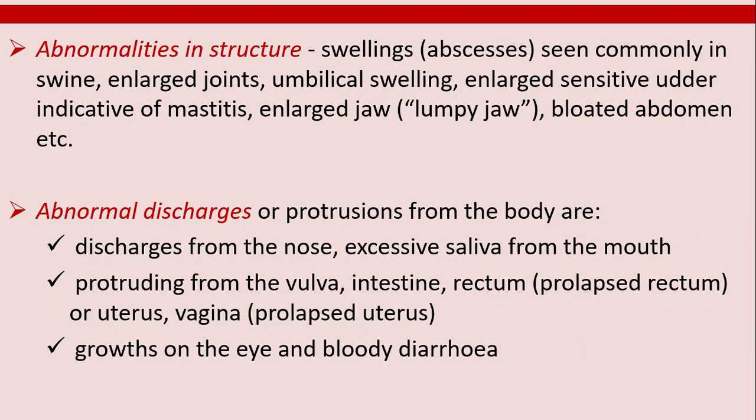Abnormalities in structure include swellings commonly seen in swine: enlarged joints, umbilical swelling, enlarged sensitive udder indicative of mastitis, enlarged jaw (lumpy jaw), and bloated abdomen. Abnormal discharges or protrusions from the body include discharges from the nose, excessive saliva from the mouth, and protrusions from the vulva, intestine, rectum, uterus, or vagina.